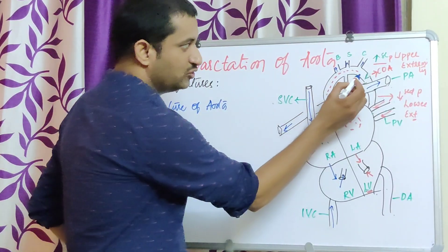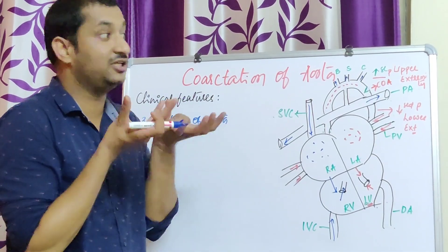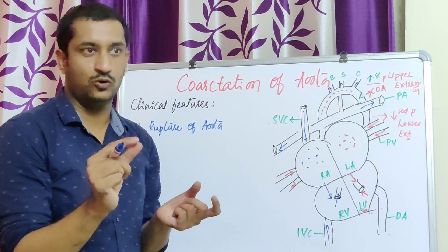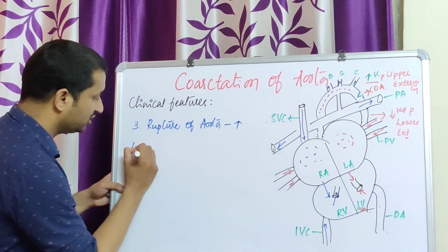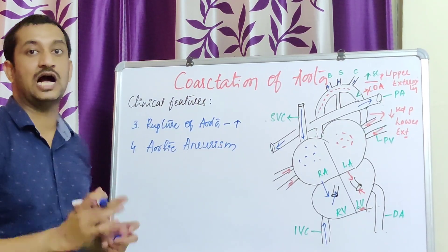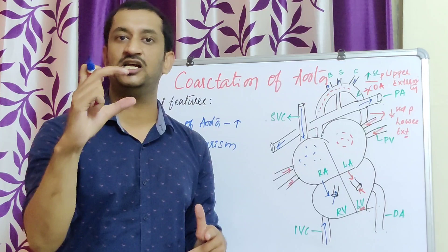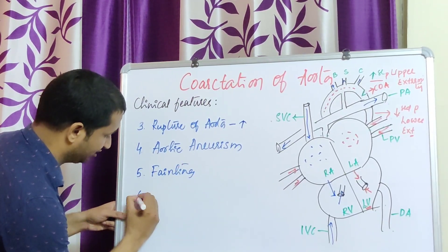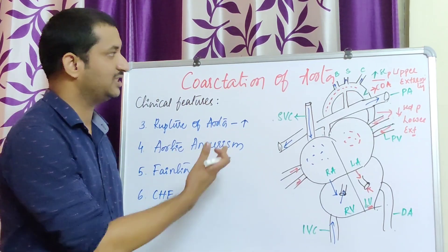Regarding complications: the increased pressure in the upper extremity keeps increasing if not treated early. If the narrowing is too much, the blood pressure keeps increasing, and in some cases the aorta may rupture. Another complication is aortic aneurysm — aneurysm is nothing but abnormal dilatation of an artery. Because of increased pressure, you can see a largely dilated aorta. Because of that, sometimes the baby may get fainting. If it is not treated early, congestive heart failure may develop, and there are chances of death also. These are the clinical features present in coarctation of aorta.